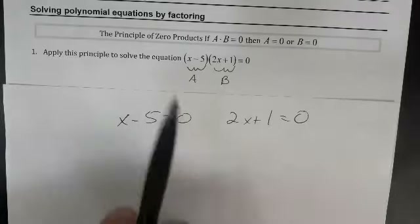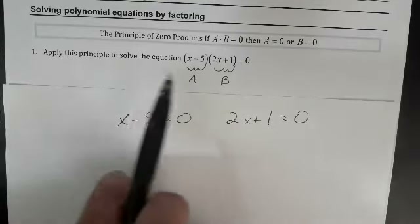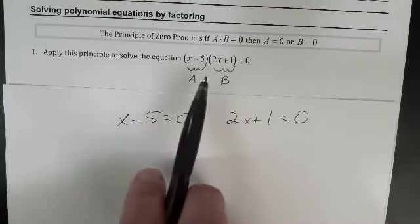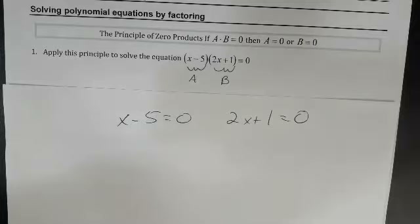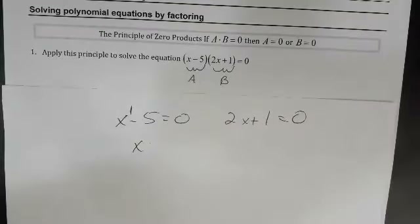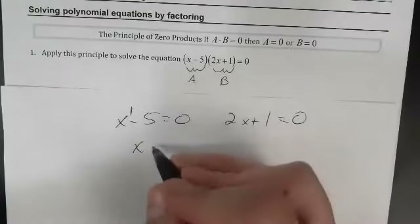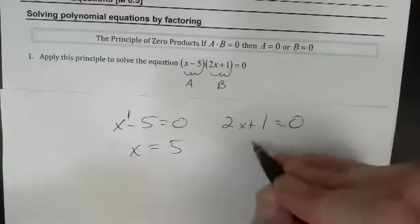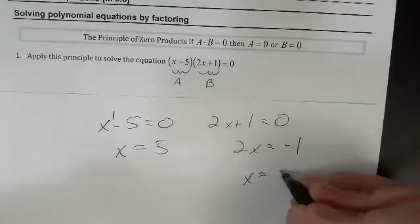So if I'm solving this, I break it apart. This originally started out as a quadratic. We've broken it into factors multiplied by each other, set equal to zero. Now we can use the zero product rule. X minus five equals zero, so X equals five. And two X plus one equals zero gives us two X equals minus one, so X equals minus one-half.